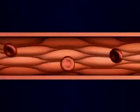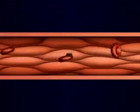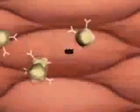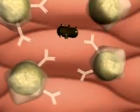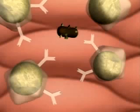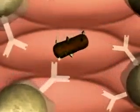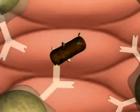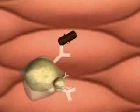When a bacterial cell enters the bloodstream, proteins on its surface act as antigens and trigger a response by the immune system. These antigens will bind to the unique B cells that have the corresponding antibodies on their surfaces. These B cells now divide.